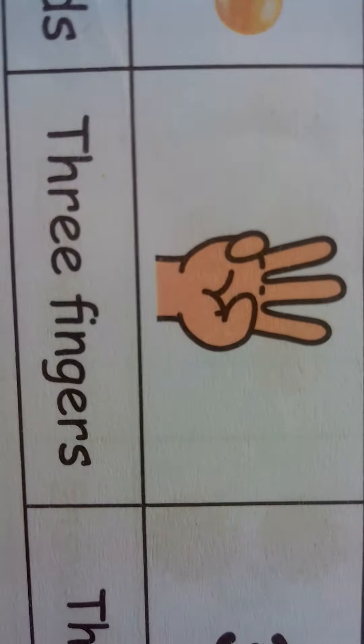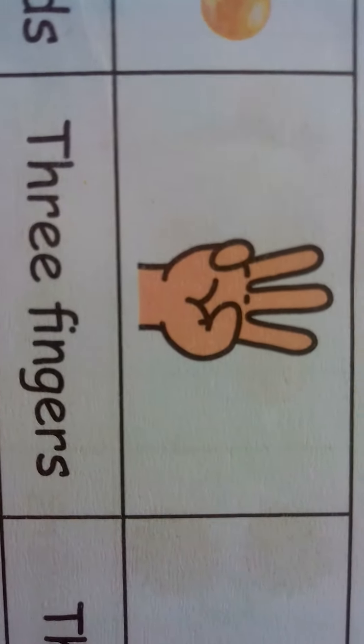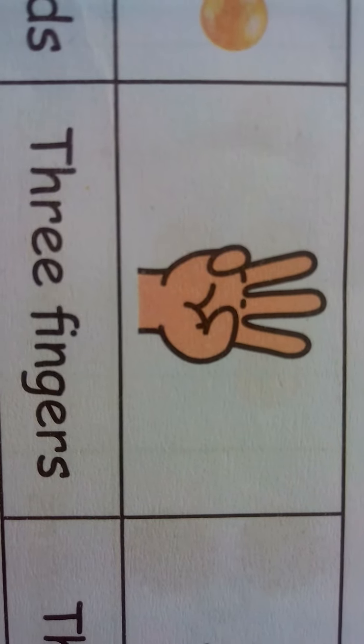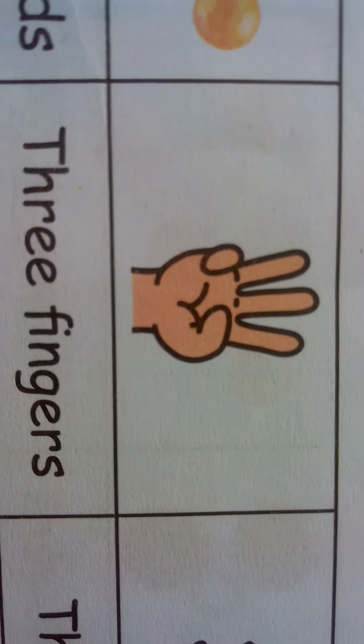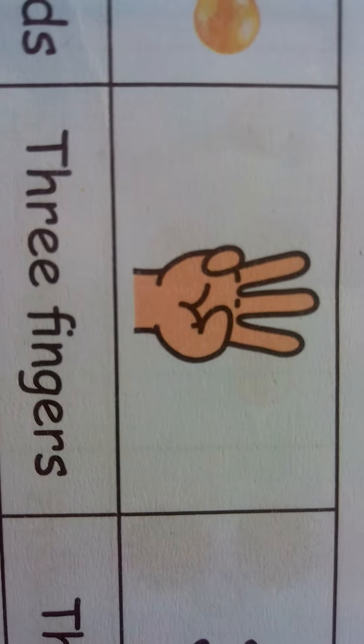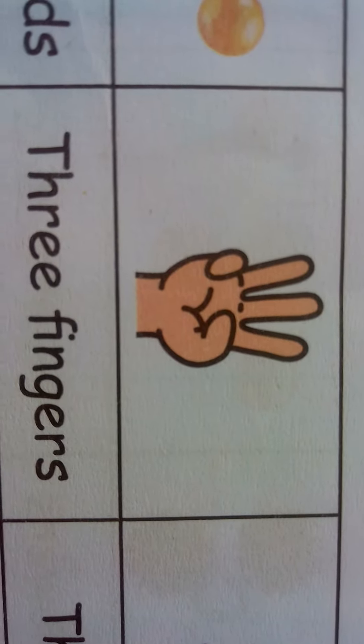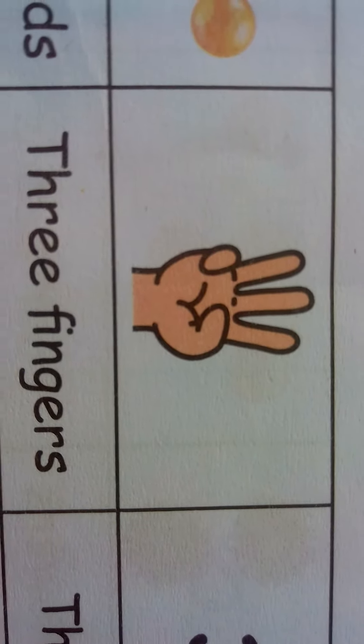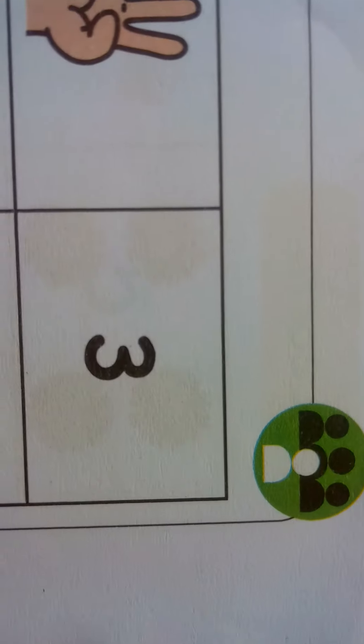Next, three fingers. How many fingers are opened? Three fingers. T-H-R-E-E, three fingers. F-I-N-G-E-R-S, three fingers. Next, numeral three. This is numeral three, number three.